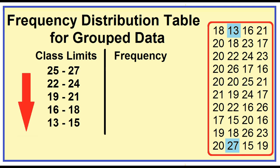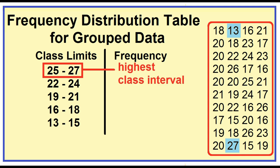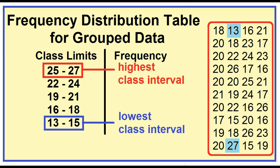Now we have 5 classes. Each contains 3 data values: 25, 26, 27 — 22, 23, 24 — 19, 20, 21 — 16, 17, 18 — 13, 14, 15. The classes are arranged in decreasing order. 25 to 27 is the highest class interval and 13 to 15 is the lowest class interval.